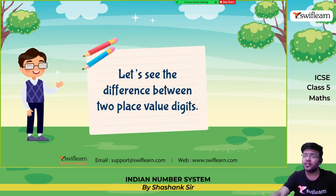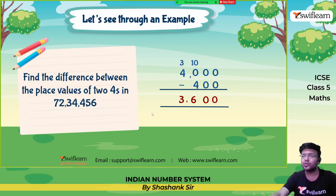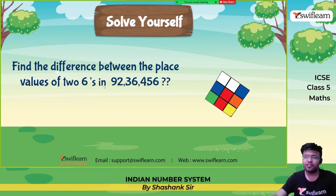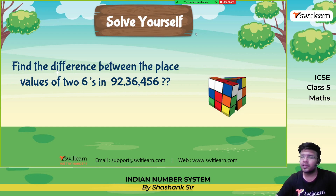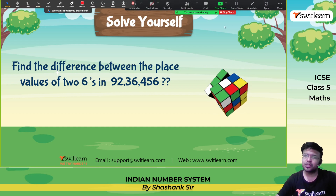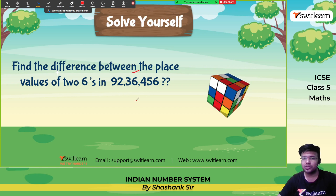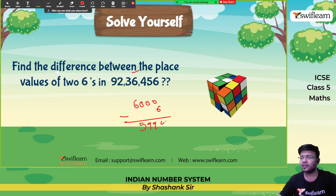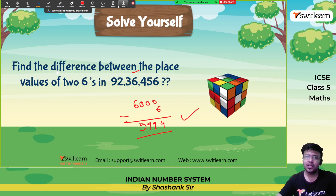Now let's see the difference between two place values of digits. Find the difference between the place values of the two 4s in the number: one 4 is in the thousands place giving 4,000, and the other 4 is in the hundreds place giving 400; subtracting gives 3,600. Find the difference between the place values of the two 6s: the larger place value of 6 is 6,000 and the smaller is 6; subtracting gives 5,994.